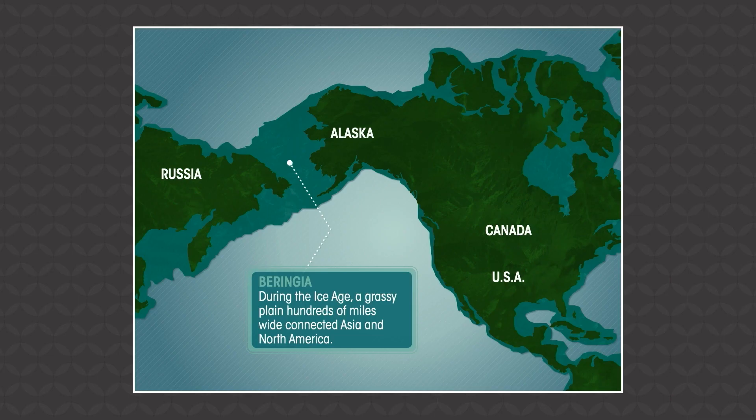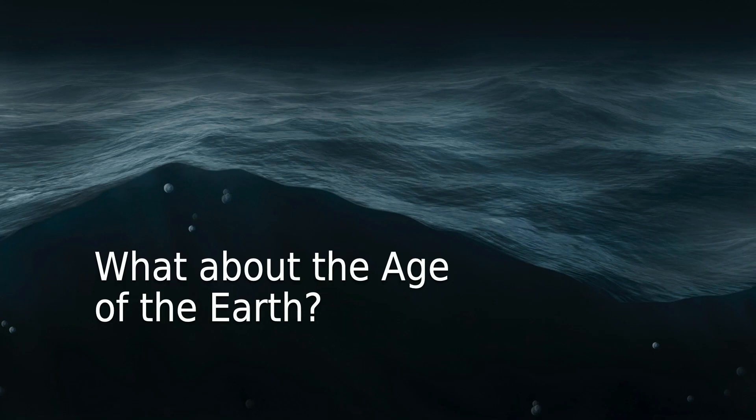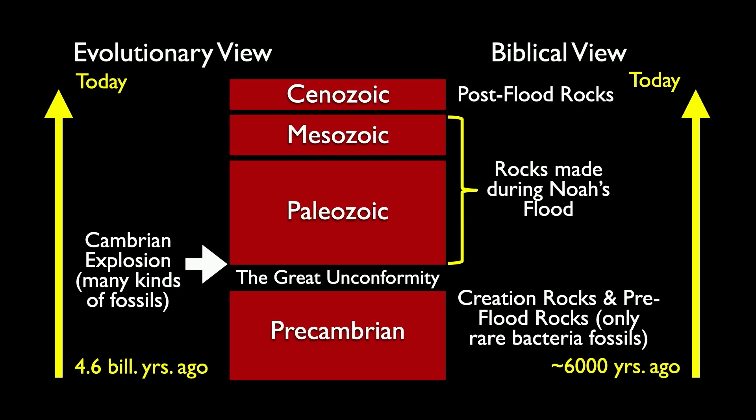A wide swath between modern-day Russia and Alaska would have allowed much migration of animals and people. So what about the age of the Earth? Evolutionists say the Earth is about 4.6 billion years old and life has been here about 3.5 billion years, but the Bible says it's all about 6,000 years.